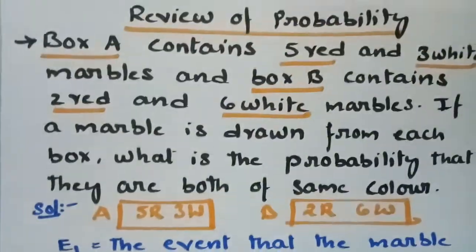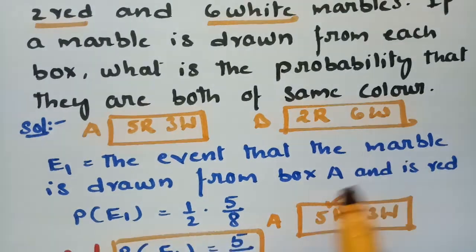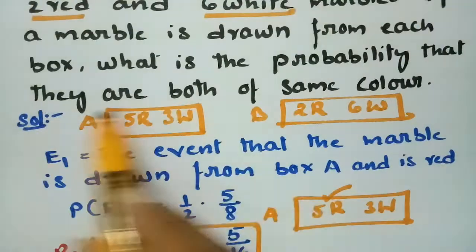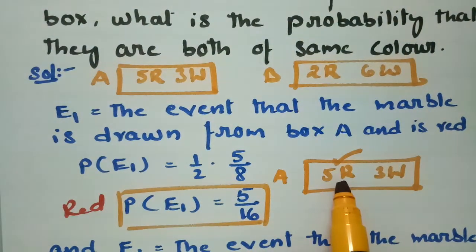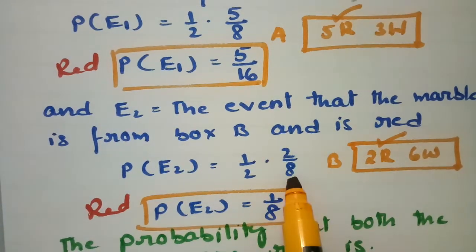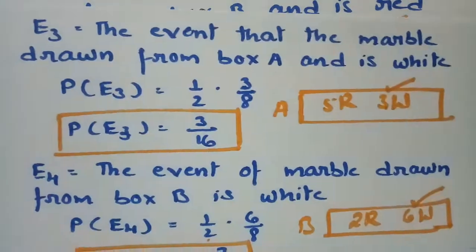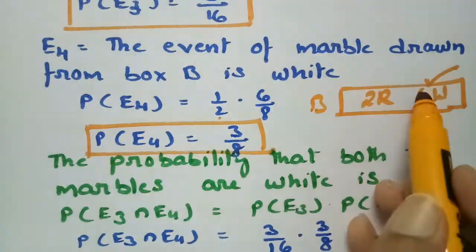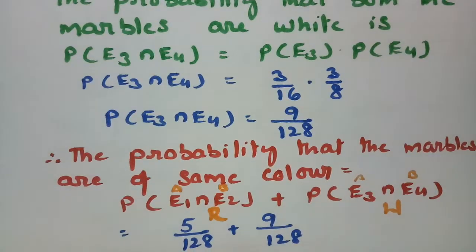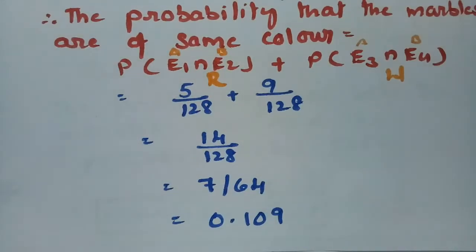Hope you all understand. To summarize: box A contains 5 red and 3 white, box B contains 2 red and 6 white. The probability both marbles are the same color is 7/64. This is a most important question, repeatedly asked. Please practice and pass it on to your friends. Thank you.